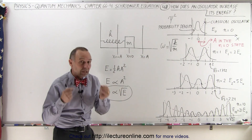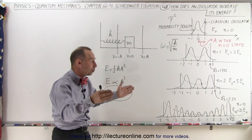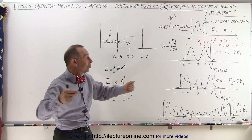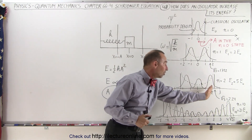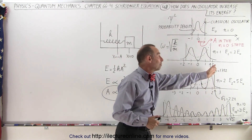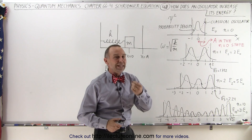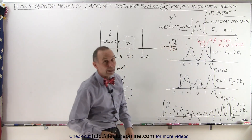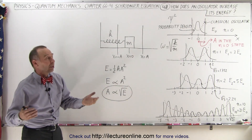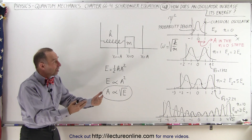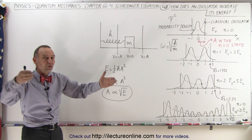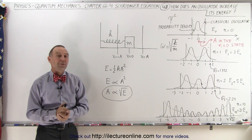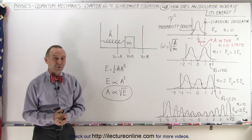The frequency doesn't change — just the amplitude of the oscillator changes, and the amplitude jumps in quantum steps as well. The distance to the next amplitude is simply the square root of the energy of that level relative to the n equals zero energy level. That's how a quantum oscillator increases energy: by half quantum jumps in the oscillatory amplitude — and that's how it is in the quantum world.